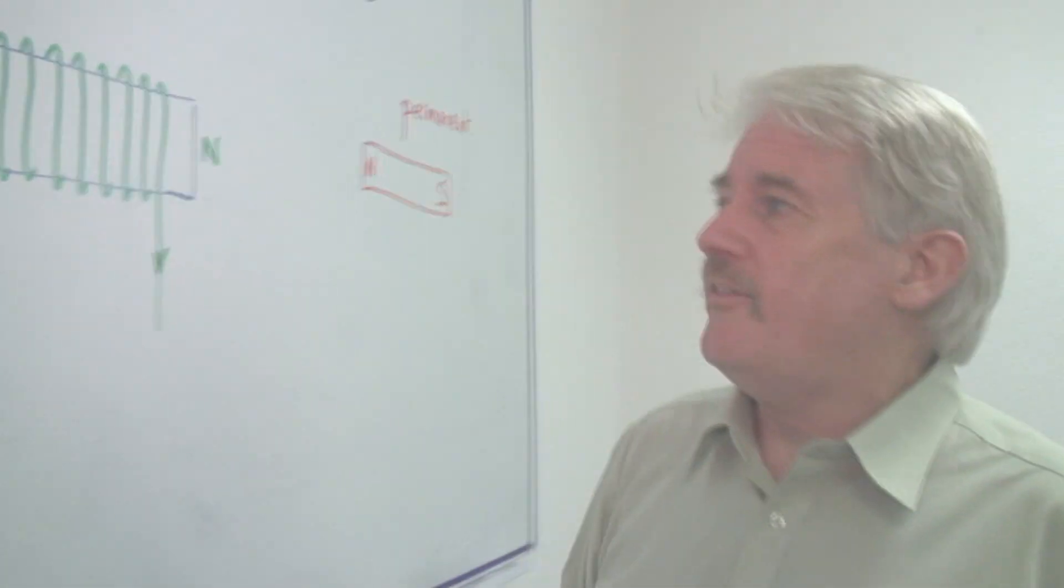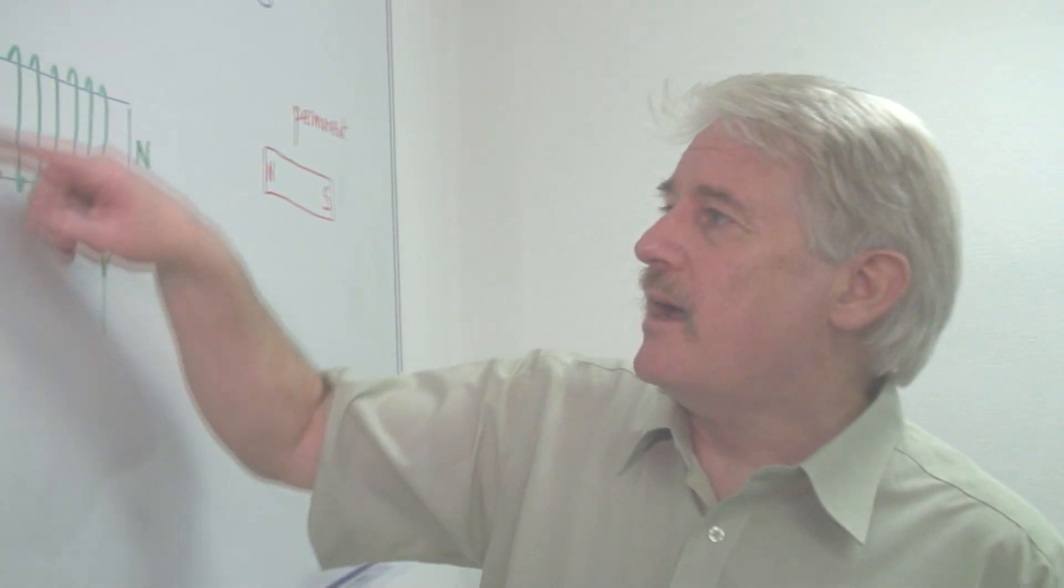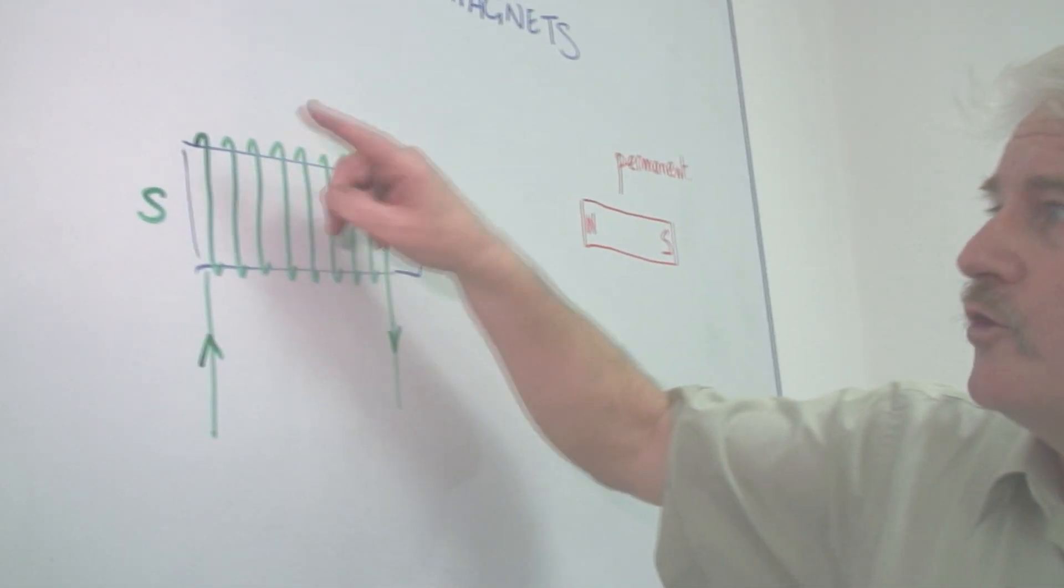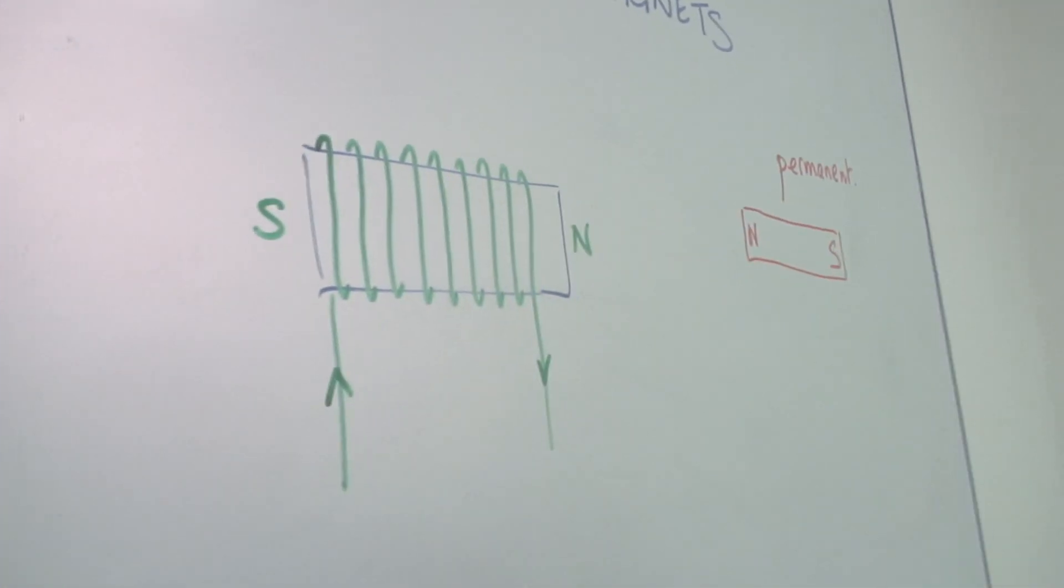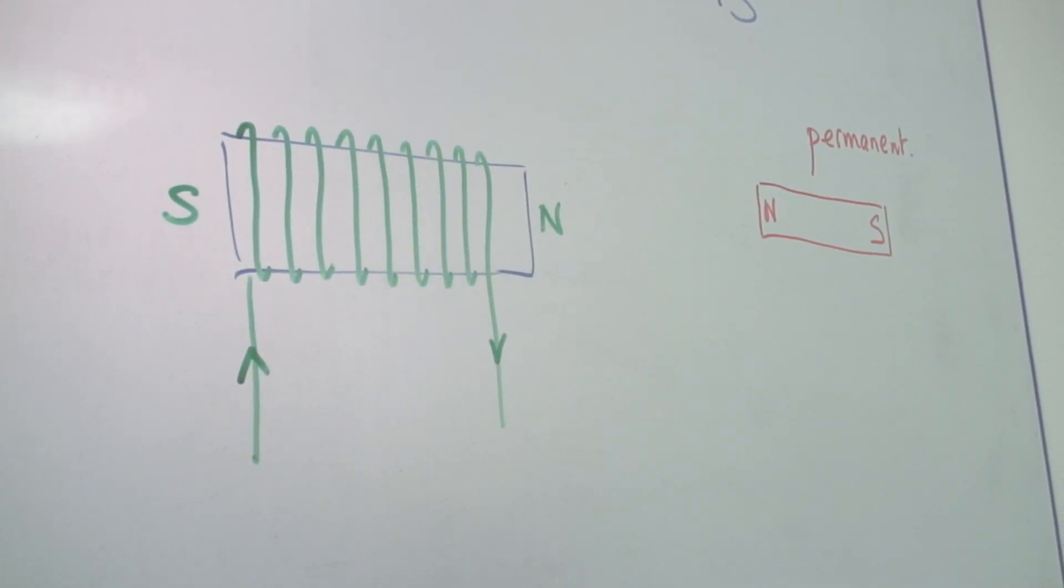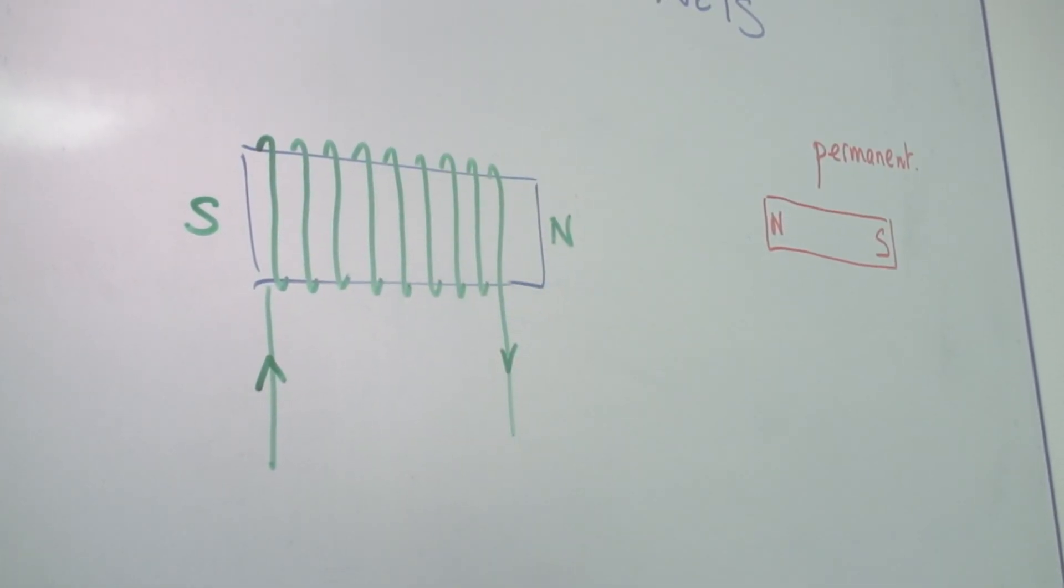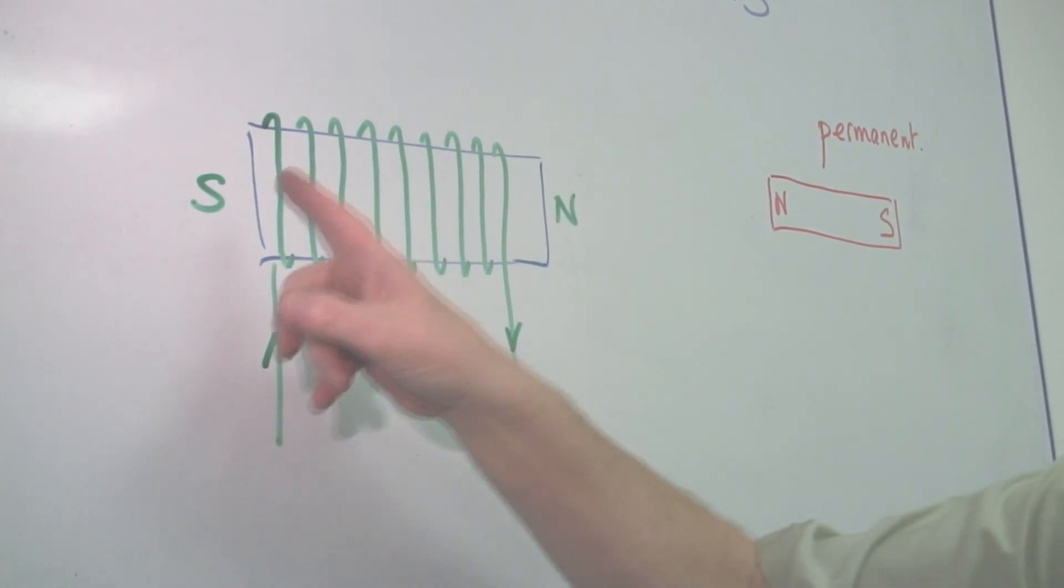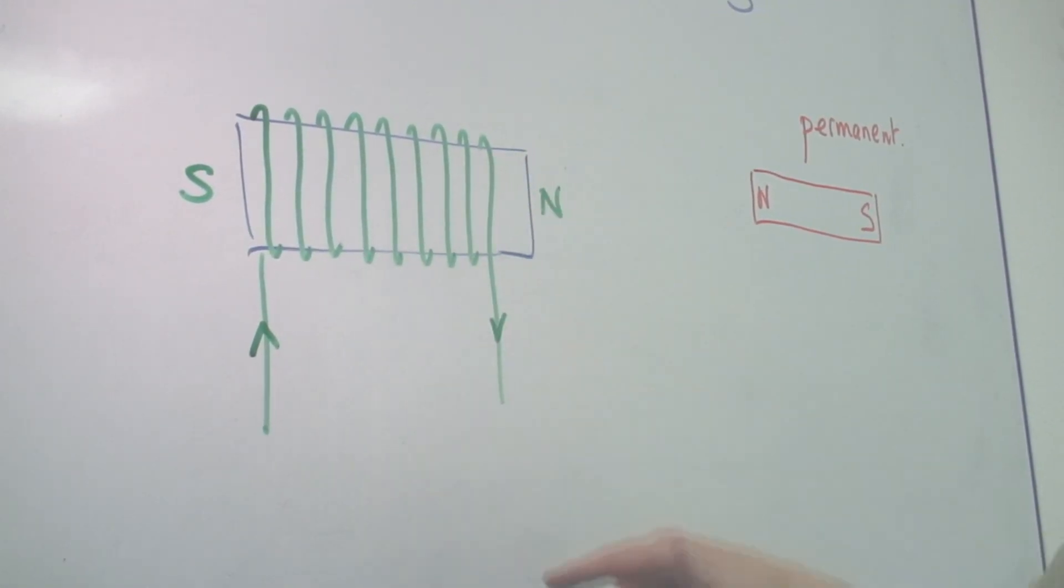But the way we get that north and south is by passing the electric current around a wire wrapped around some coil of some kind. This could be a cardboard tube for example. If I wrap it round,